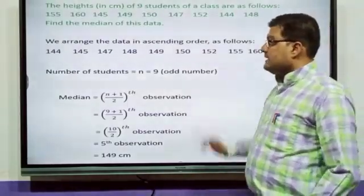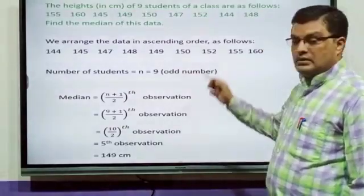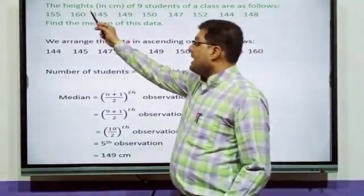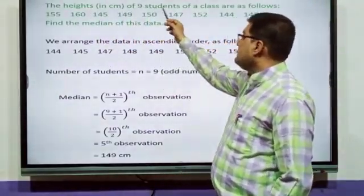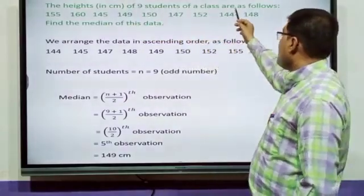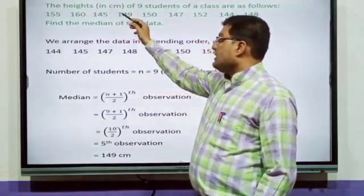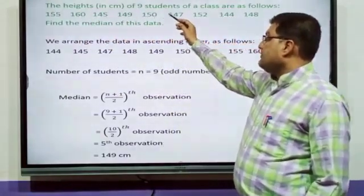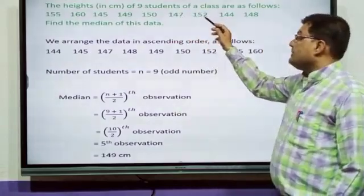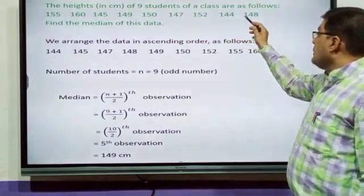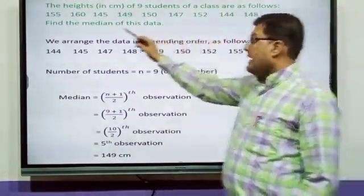Now, we will see how to find the median if the question is: the heights in centimeter of 9 students of a class are as follows: 155, 160, 145, 149, 150, 147, 152, 144, 148. Find the median of this data.